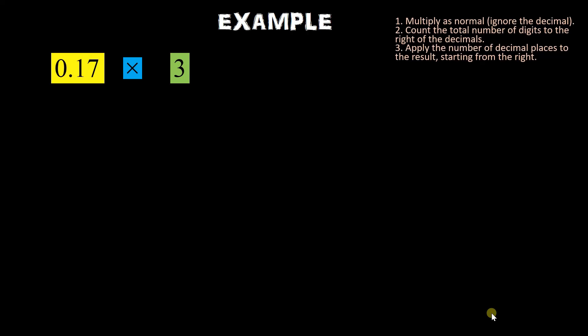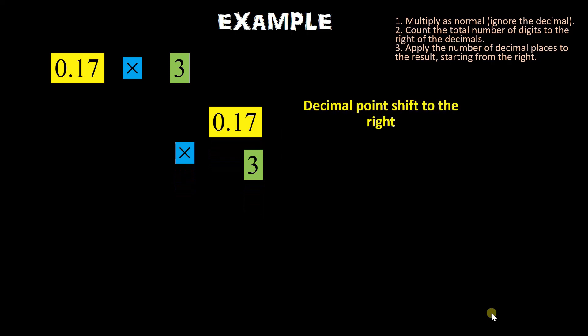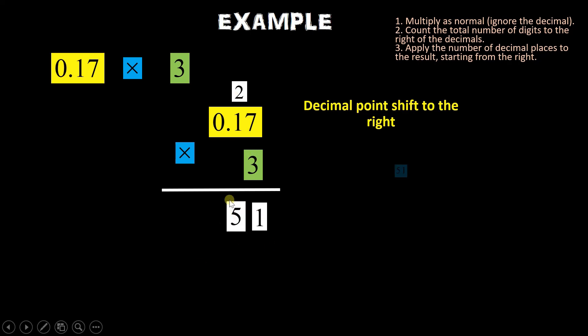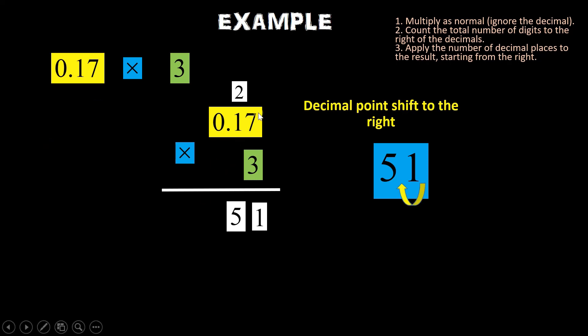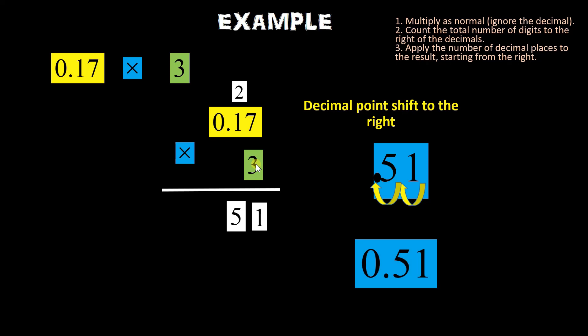Example: 0.17 times 3. Again yung step 1, 2, and 3. Number 1: ignore the decimal — isinip natin sa right. 3 times 7 is 21 — 1 na matitira dito sa baba, carry natin yung 2. 1 times 3 is 3 plus 2 is 5 — ito yung sagot natin. Again bibilangin natin step 2 kung ilan yung ating decimal digit: dito dalawa, sa pangalawa wala naman — so dalawa yung ating digits. Count tayo: isa, dalawa — andun yung ating decimal. Kaya ang sagot natin 0.51.